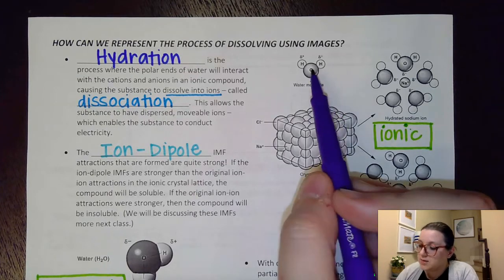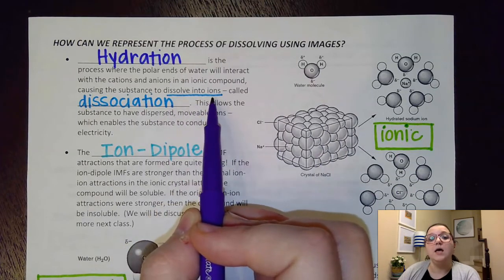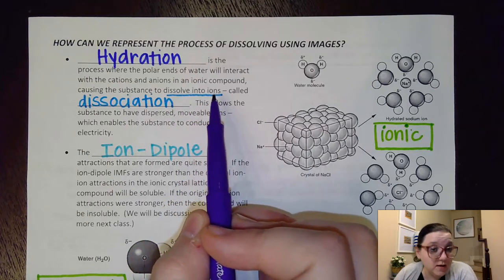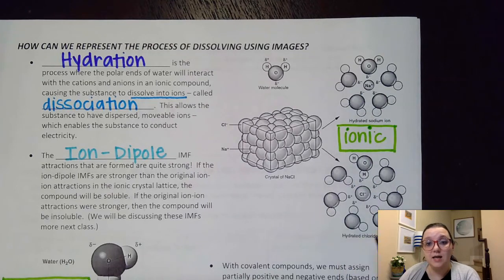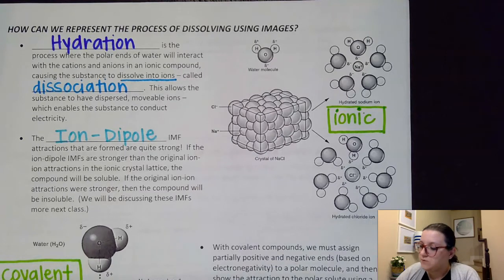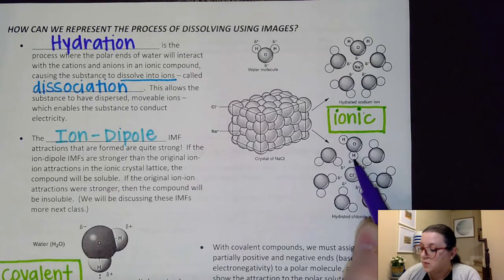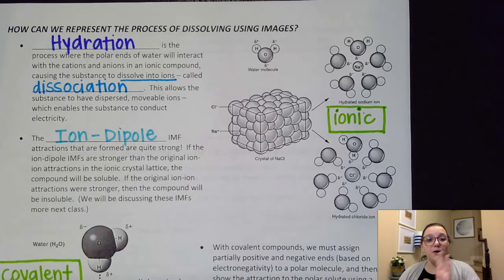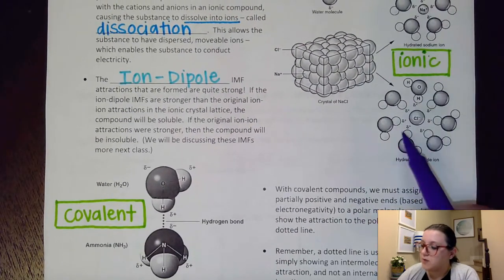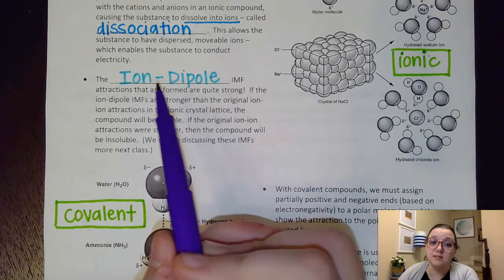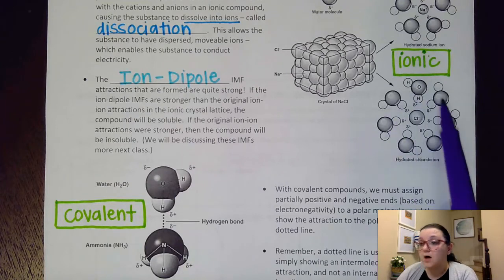When water is strong enough to pull apart the attractive forces in NaCl, it splits the ionic compound into ions — when a compound dissolves specifically into ions, we call that process dissociation. The water molecules surround the cation and anion in a strategic way: around the positive sodium, the negative oxygen end of water molecules surrounds it, while around the negative chlorine, the positive hydrogen ends surround it. We call those attractions ion-dipole intermolecular forces.